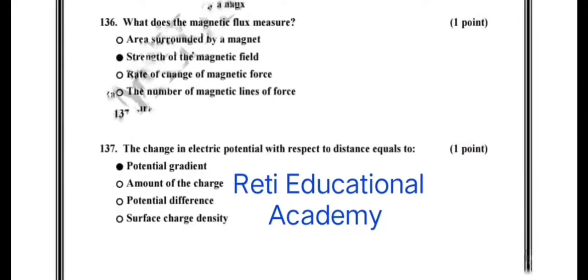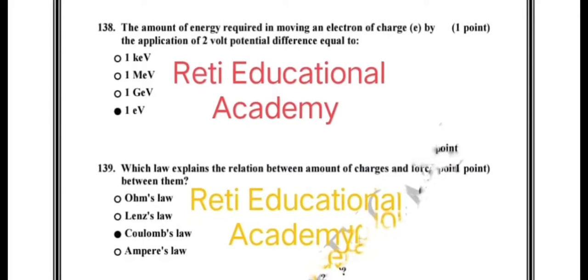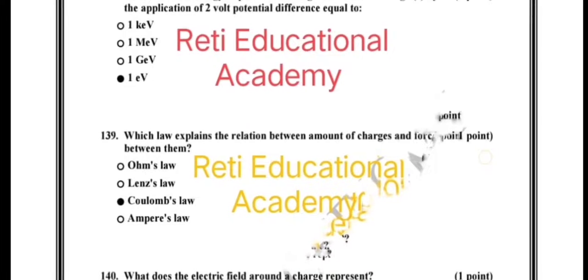Question number 137: the change in electric potential with respect to distance equals to potential gradient. Question number 138: the amount of energy required in moving an electron of charge e by the application of two volt potential difference is equal to one eV.